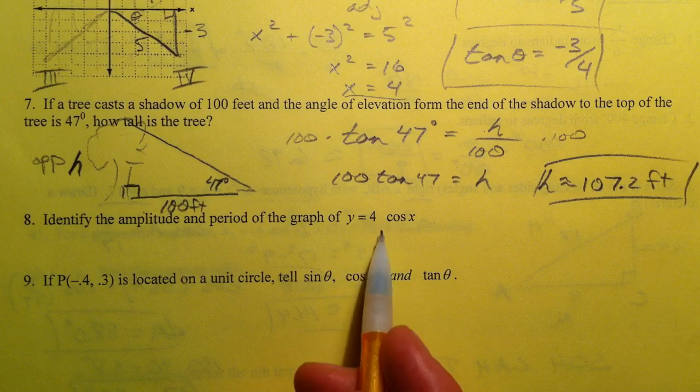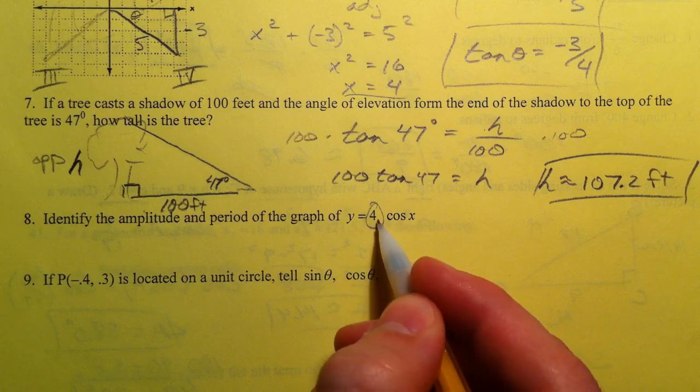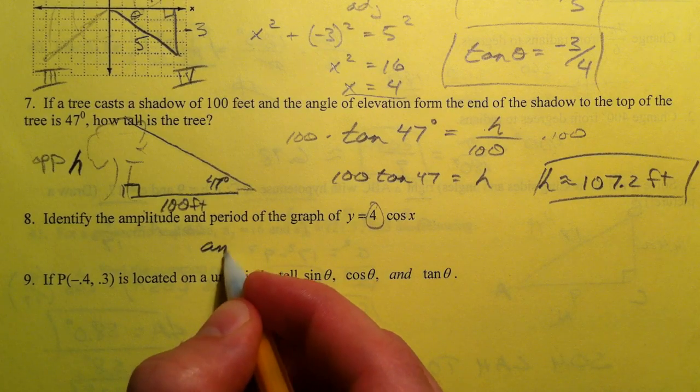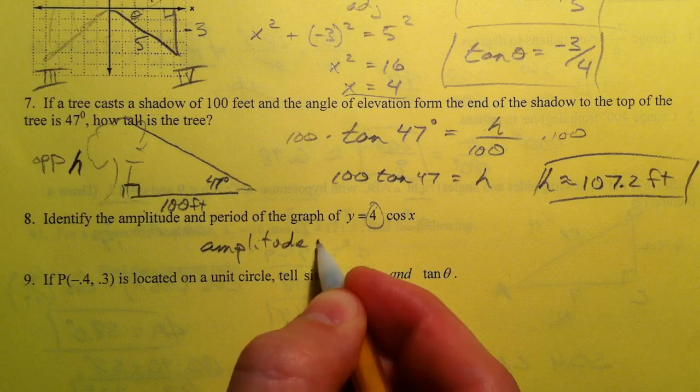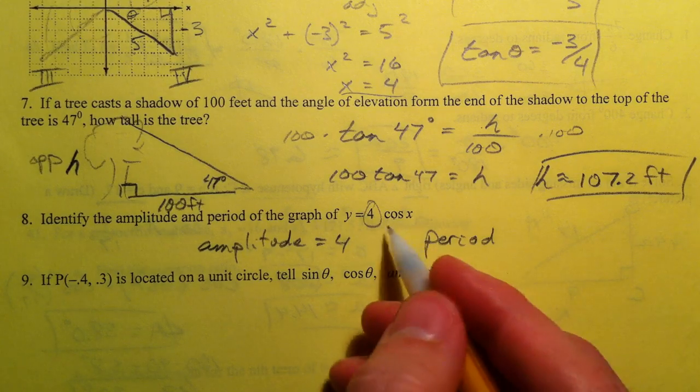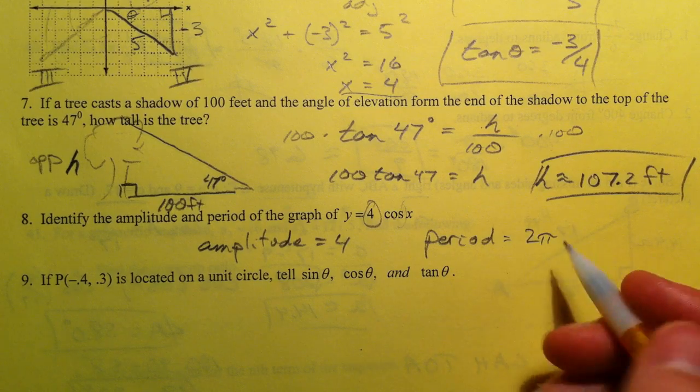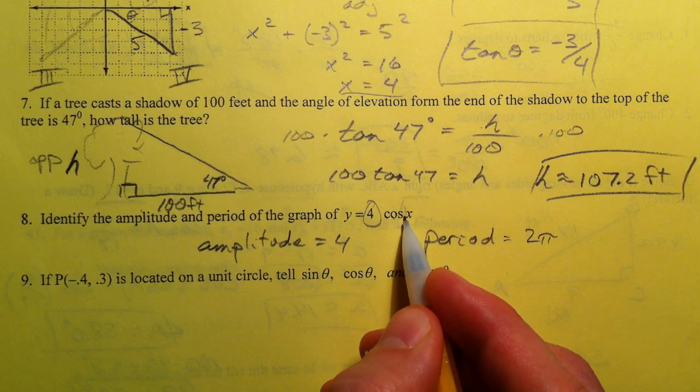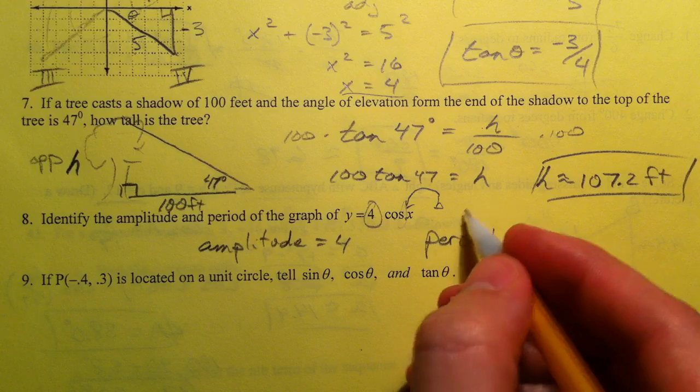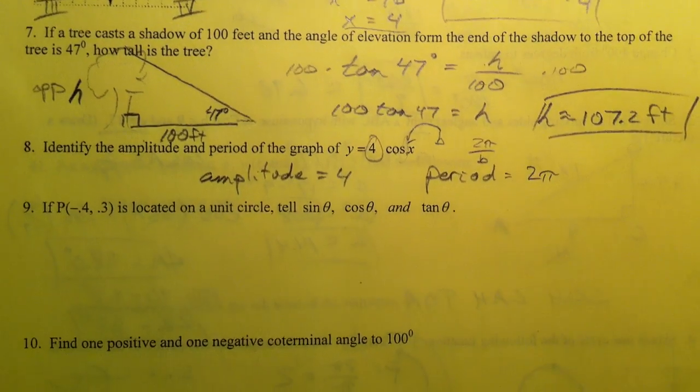Identify the amplitude and the period of the graph of 4. Y equals 4 cosine of x. This 4 is being multiplied by the cosine of x. And so that is what stretches it out. And so our amplitude is 4. The period of every sine and cosine graph it repeats every 2π. And because there's nothing affecting it here it's just 2π. If there was a number in front of x, our b goes right here, it would be 2π divided by b. But there's not.